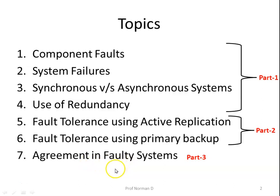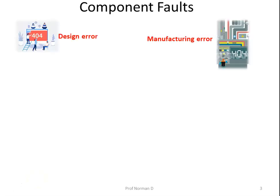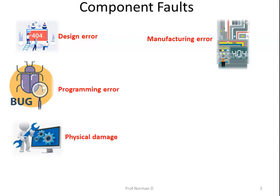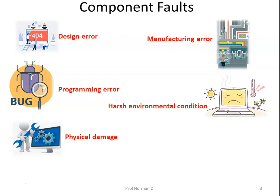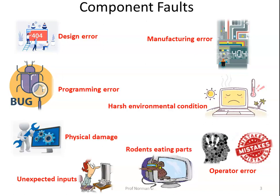In the third part we will discuss agreement in faulty systems. So what is a fault? A fault is a malfunction possibly caused by a design error, a manufacturing error, a programming error, physical damage, harsh environmental conditions, unexpected inputs, operator errors, rodent eating part of it, and many more other causes.